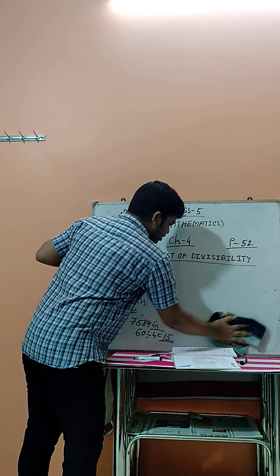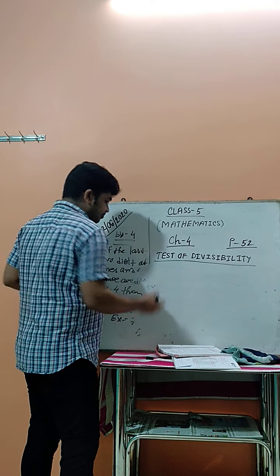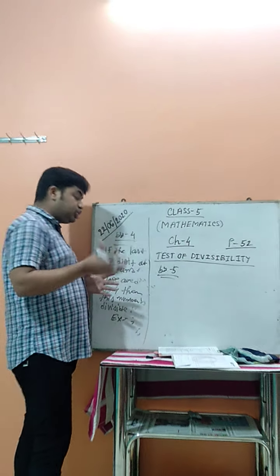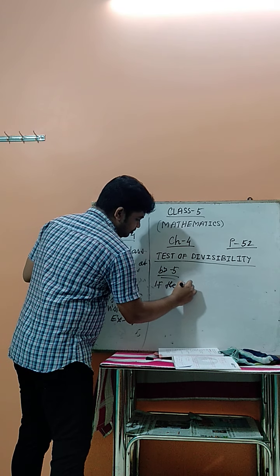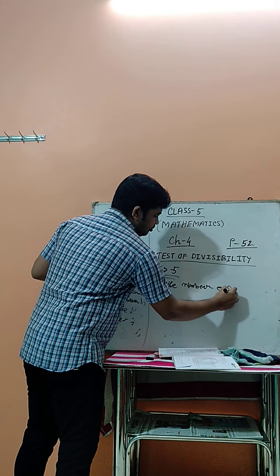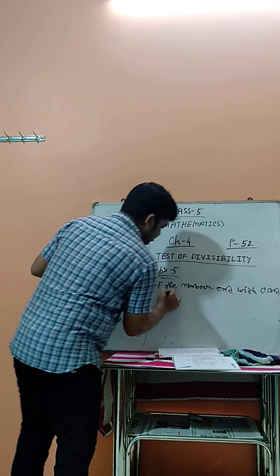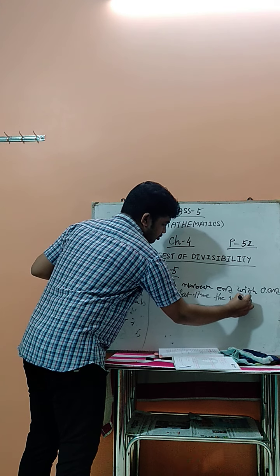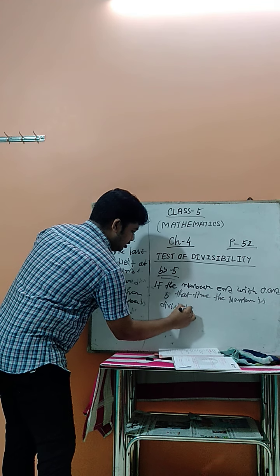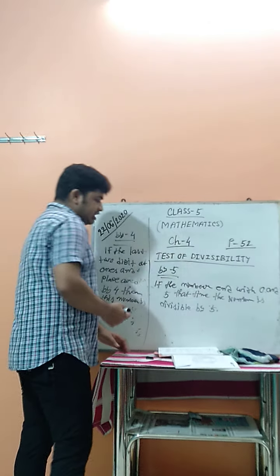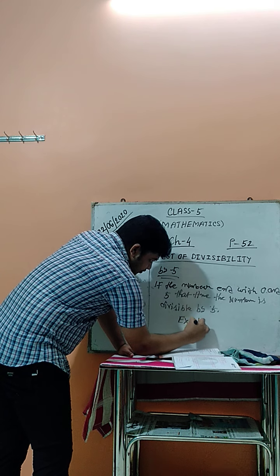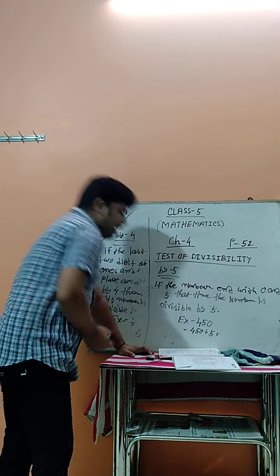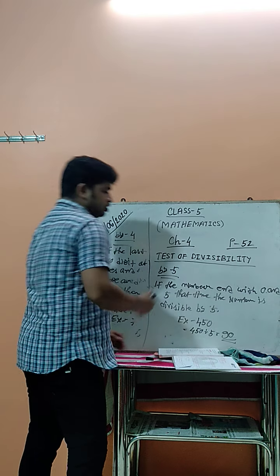Now, how do we understand which number is divisible by 5? If the number ends with 0 or 5, then the number is divisible by 5. For example, 450 ends with 0. If we divide 450 by 5, we get 90, so it is divisible by 5.